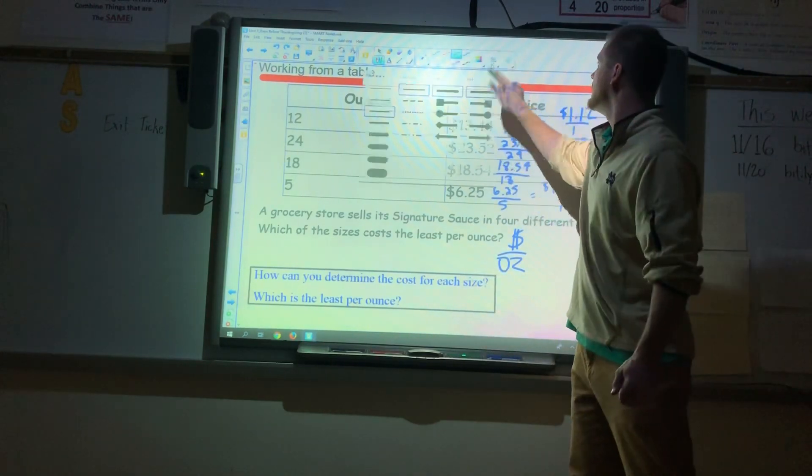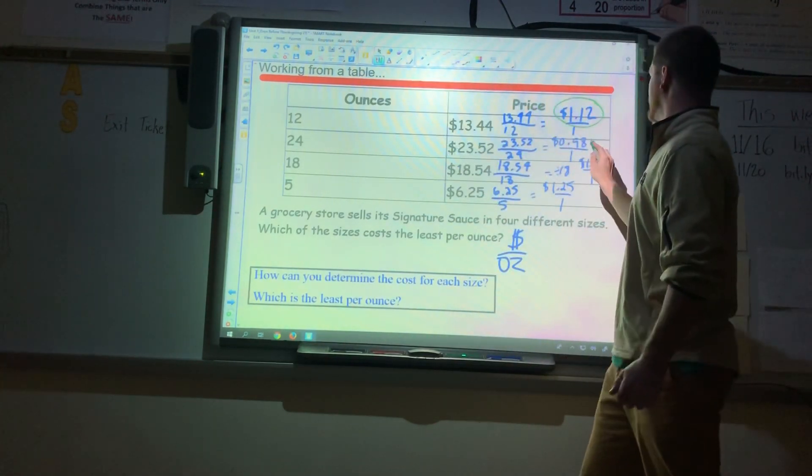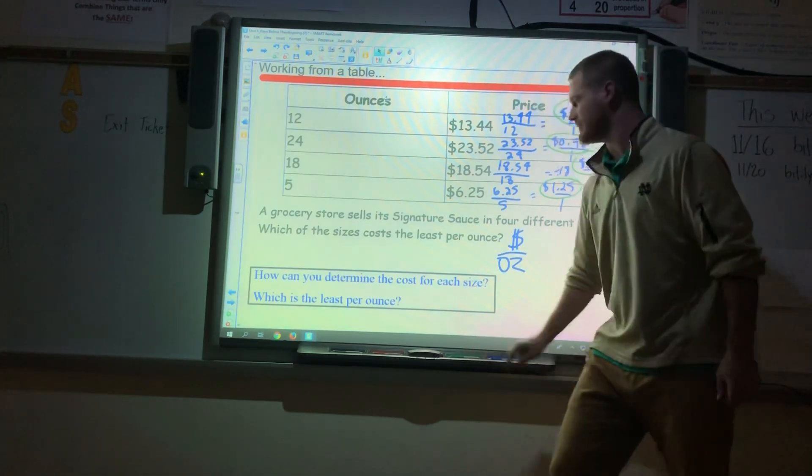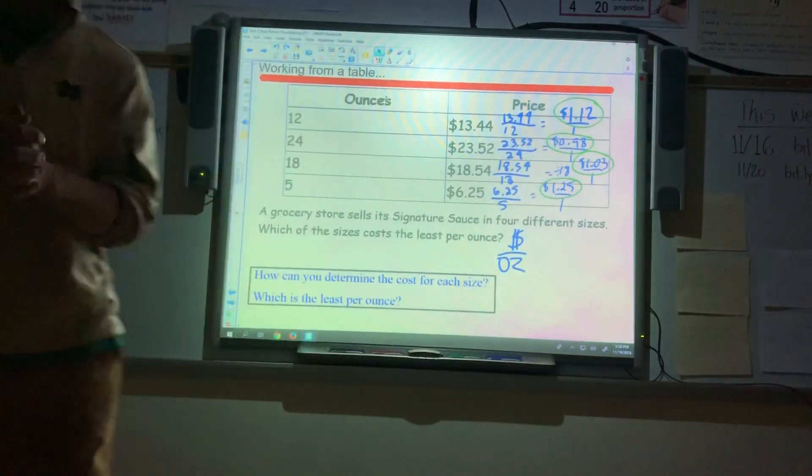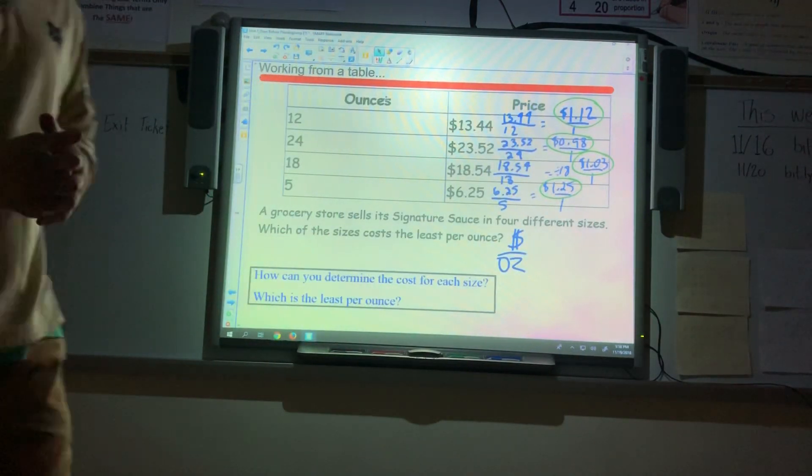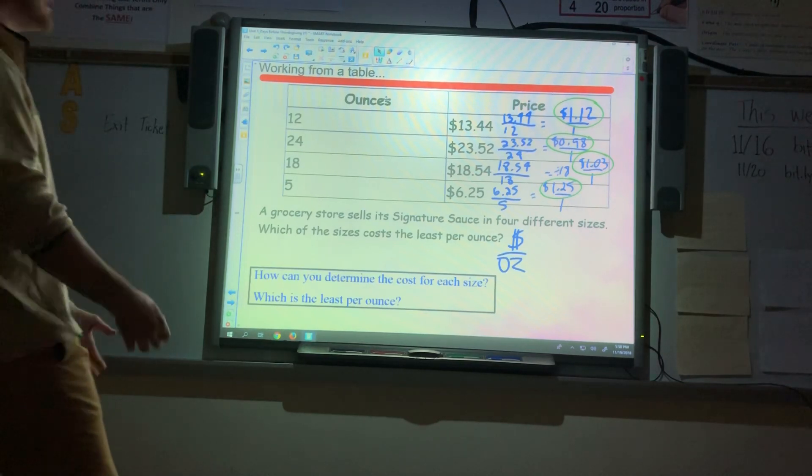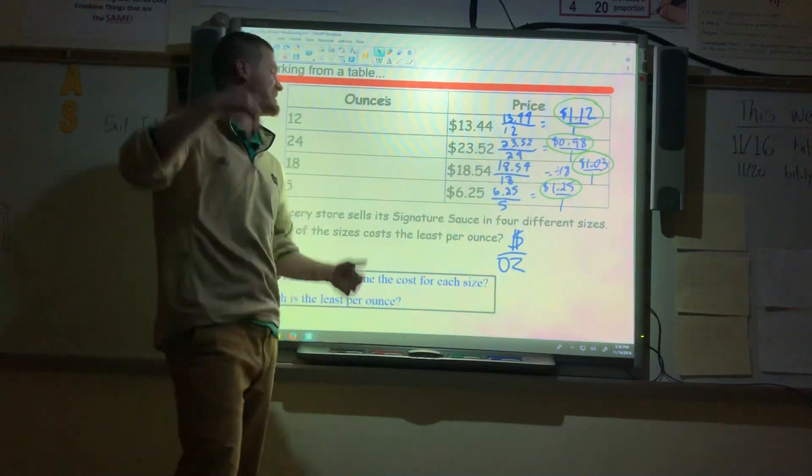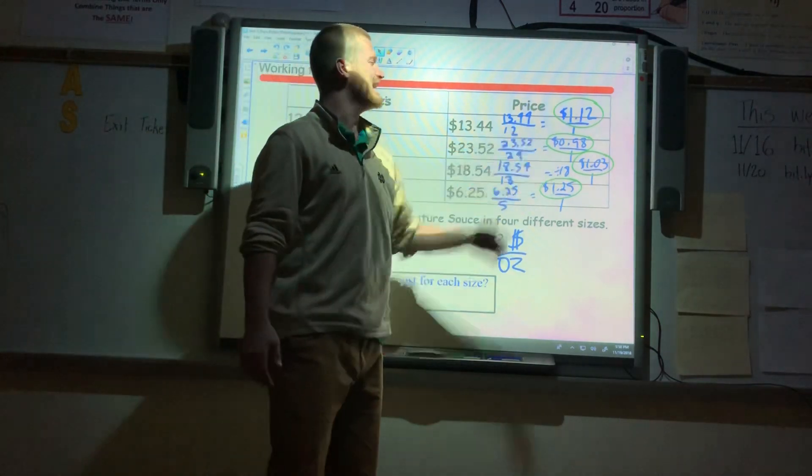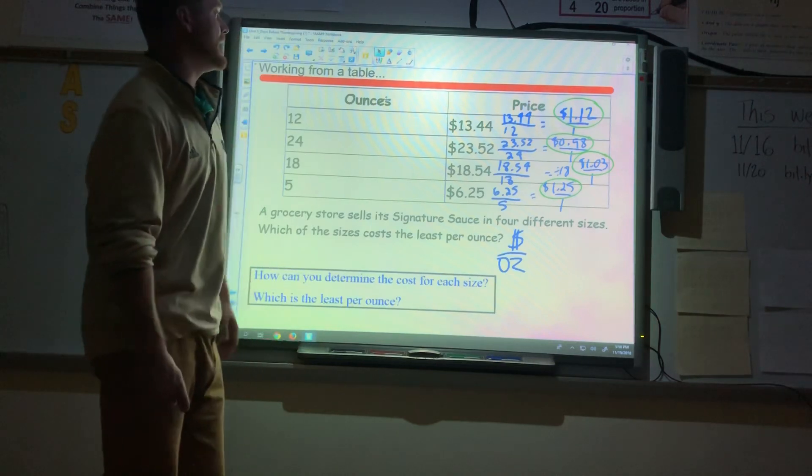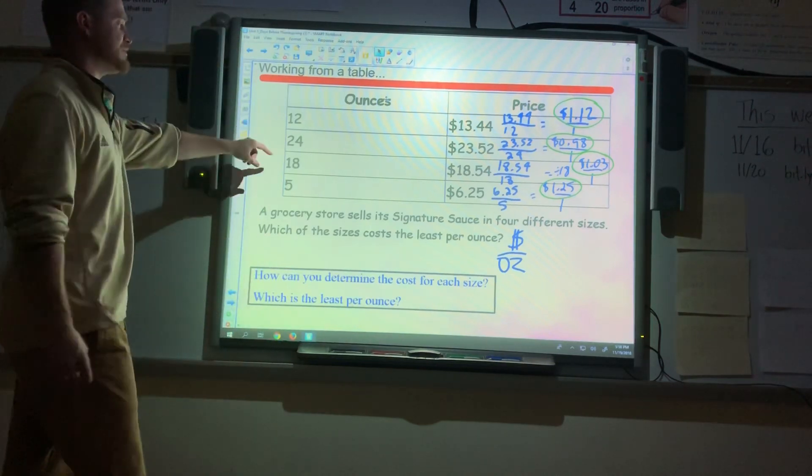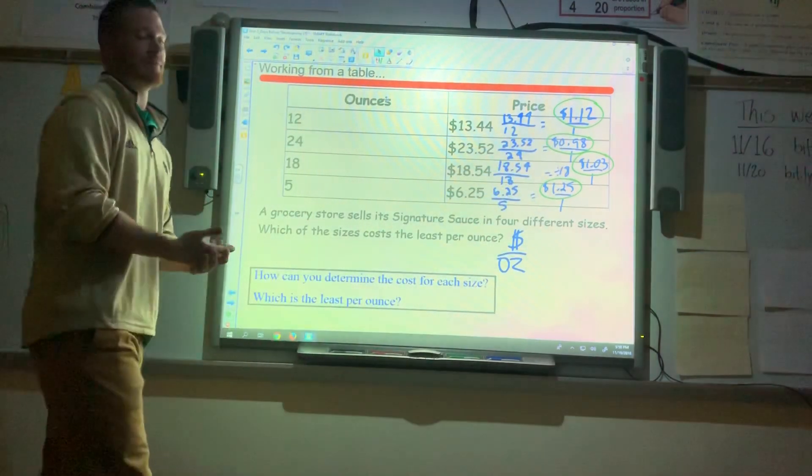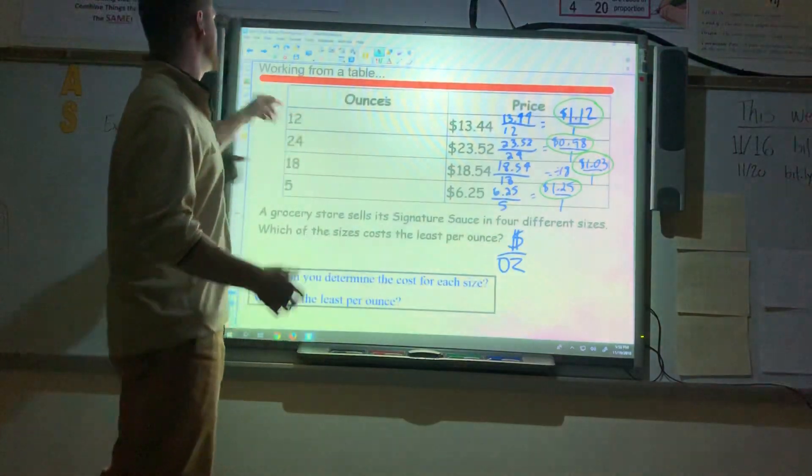So we're going to circle these in green so we know what we're looking at. We have $1.12, we have $0.98, we have $1.03, and $1.25. Looking at the blue section down there, it says, how can you determine the cost for each size? Well, we just did that by dividing straight across and finding the unit rate. And which is the least per ounce? And like we said from the get-go, using our estimation, this 24-ouncer is in fact the cheapest price per ounce. The next cheapest would be the 18-ouncer, except the 24-ouncer is $0.05 cheaper per ounce. So if we're buying a lot of it, we want to go with the 24-ouncer.